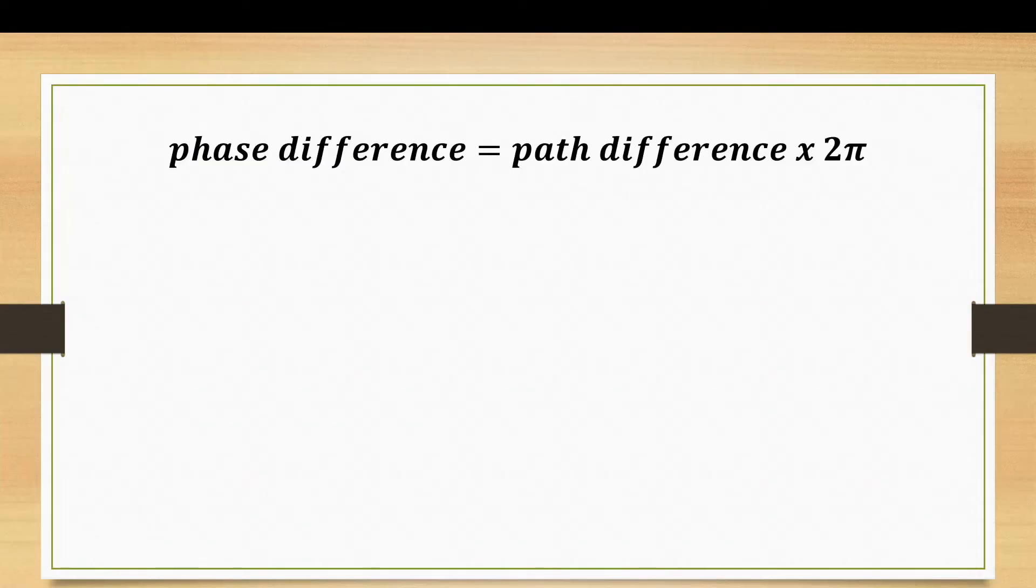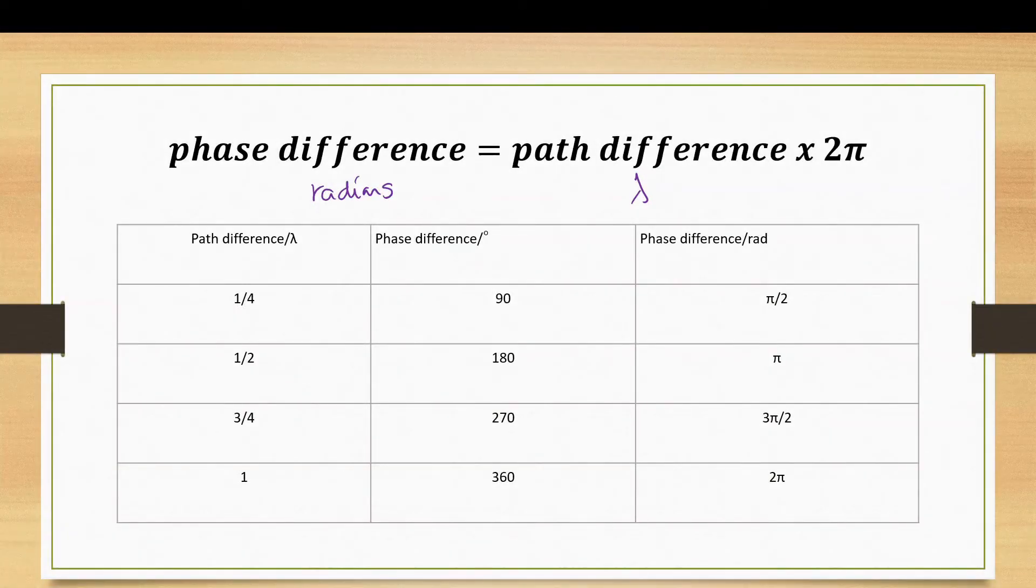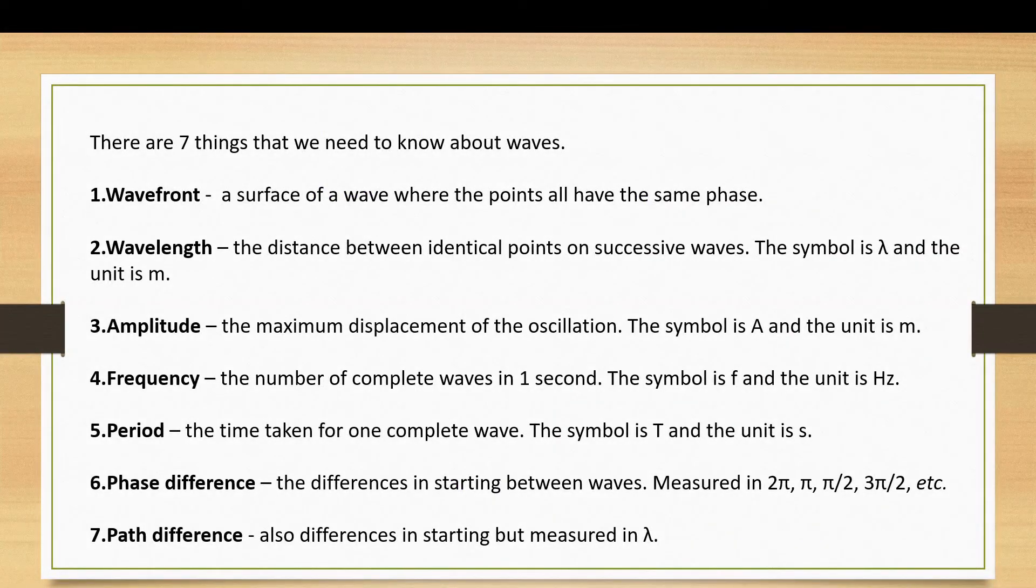If you want to convert between path difference and phase difference, you take your path difference in lambda and you multiply it by 2 pi to get your phase difference in radians. And here's a table that shows you the conversion factors between the two. If you do maths, you'll know that 2 pi radians is 360 degrees. It comes from the geometry of circles. So here are seven things that we need to be able to know, and these are the vocabulary terms that you're expected to be able to use with confidence when talking about waves.